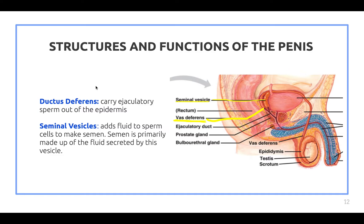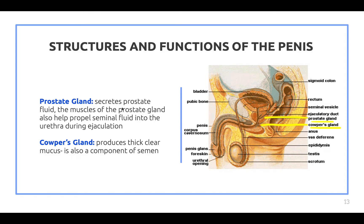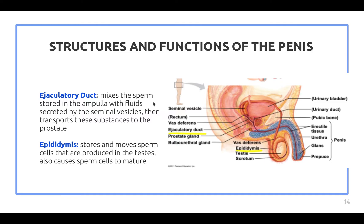The ductus deferens carries ejaculatory sperm out of the epididymis. The seminal vesicles add fluids to sperm cells to make semen — semen is primarily made up of the fluids secreted by this vesicle. The prostate gland secretes prostate fluid, and the muscles of the prostate gland also help propel seminal fluid into the urethra during ejaculation. Cowper's gland produces thick clear mucus, which is also a component of semen.